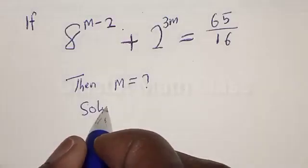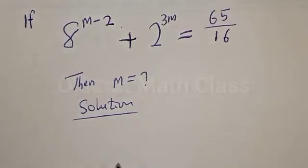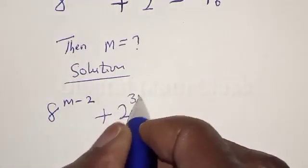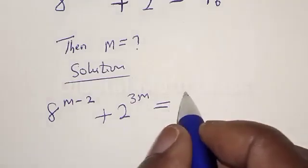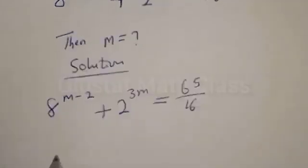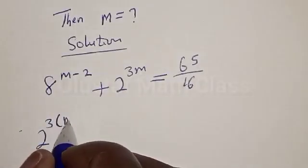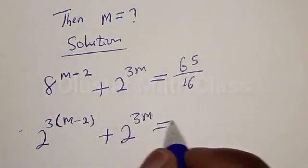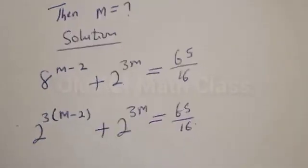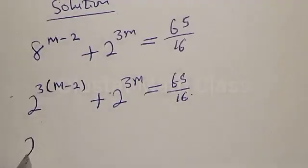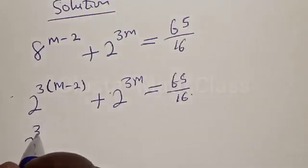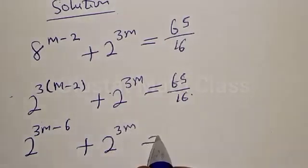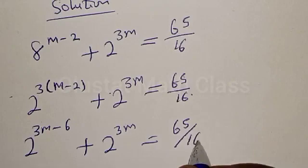We have 8 raised to power m minus 2 plus 2 raised to power 3m is equal to 65 divided by 16. Now 8 can be expressed as 2 raised to power 3, so we have 2 raised to power 3 times (m minus 2) plus 2 raised to power 3m equal to 65 divided by 16. Then let's open this bracket: we have 2 raised to power 3m minus 6 plus 2 raised to power 3m is equal to 65 divided by 16.